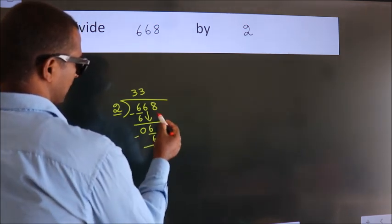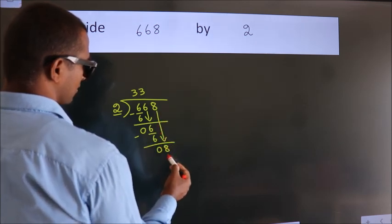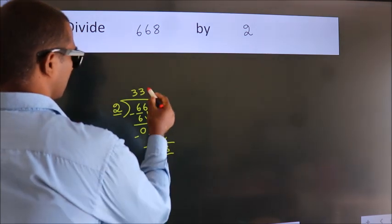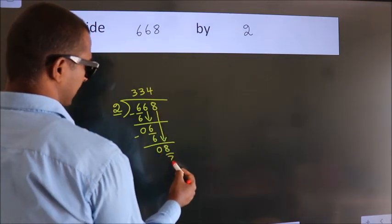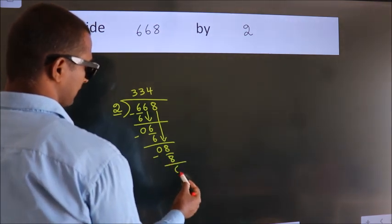After this, bring down the beside number. So 8 down. When do we get 8 in the 2 table? 2 fours, 8. Now we subtract. We get 0.